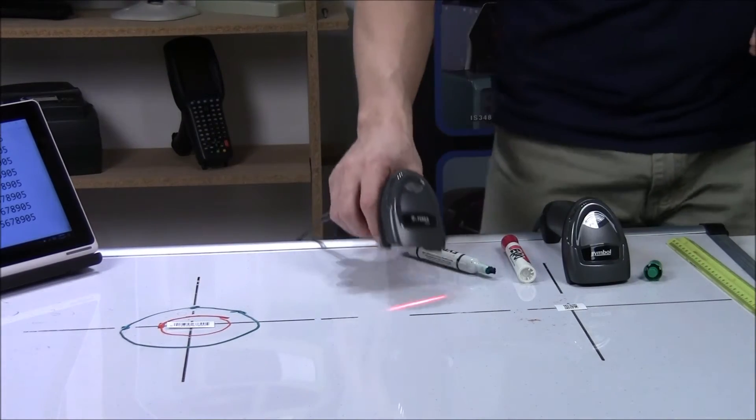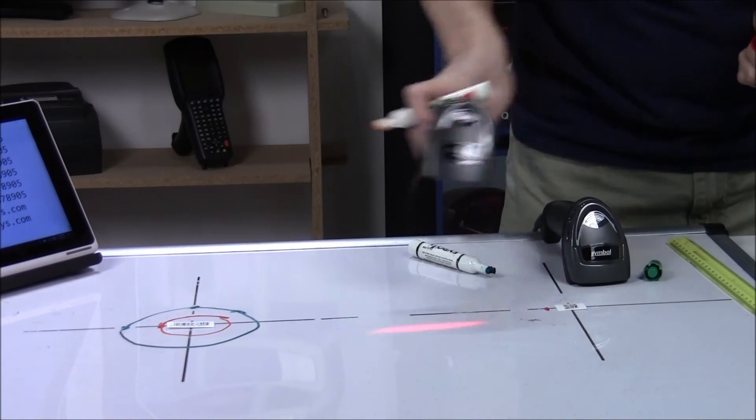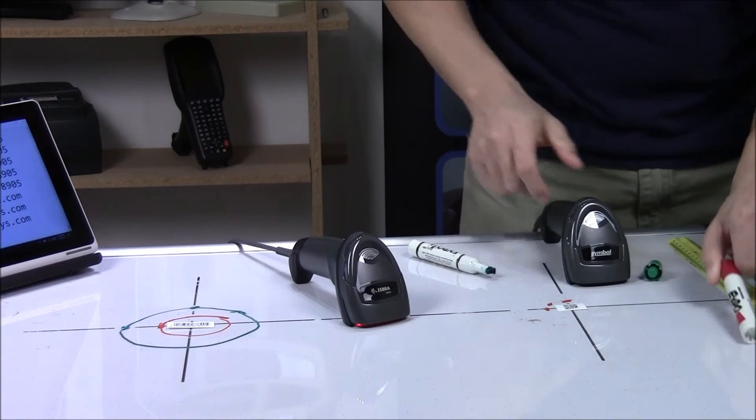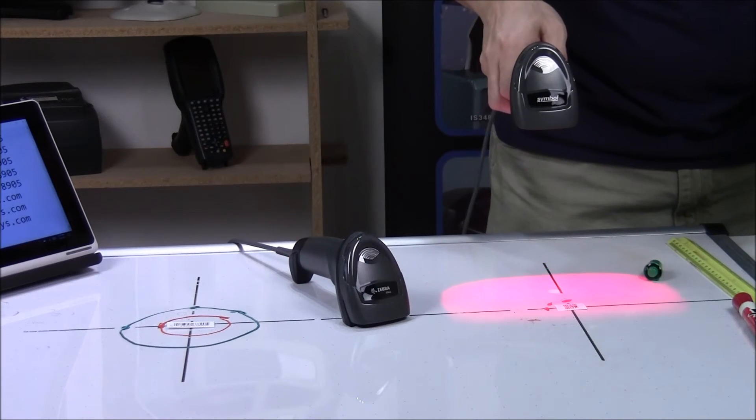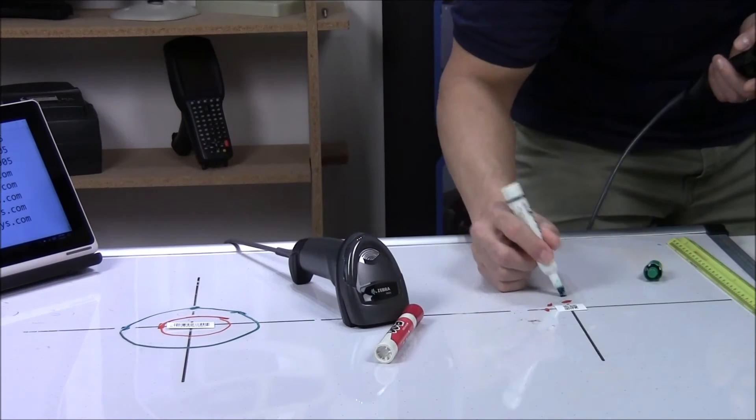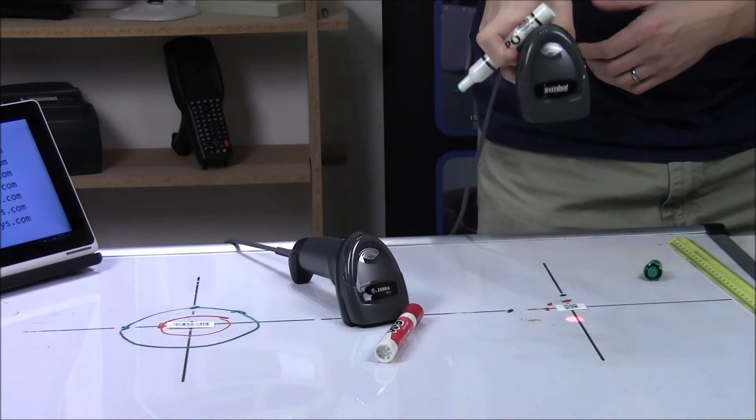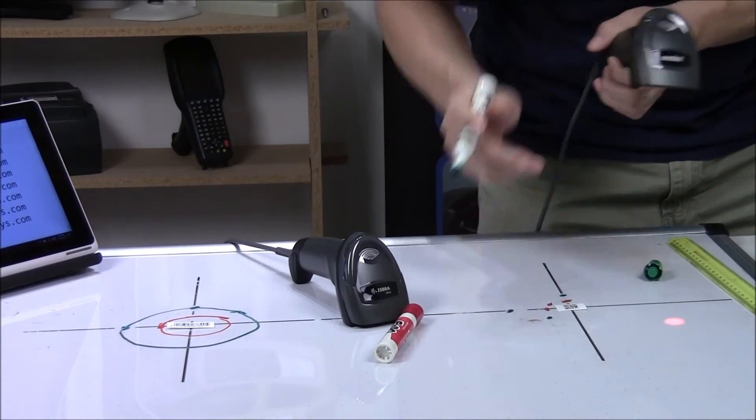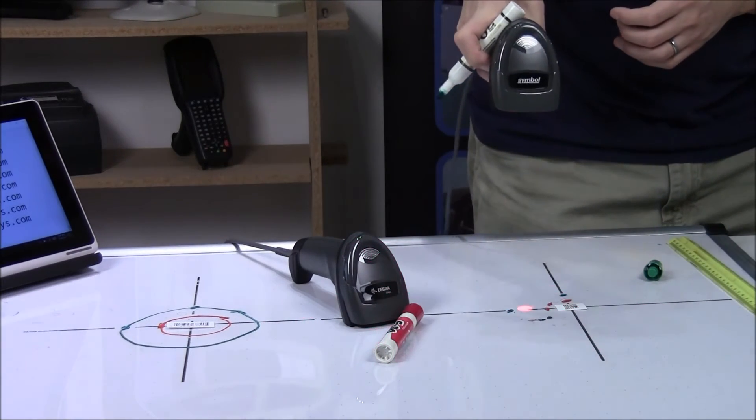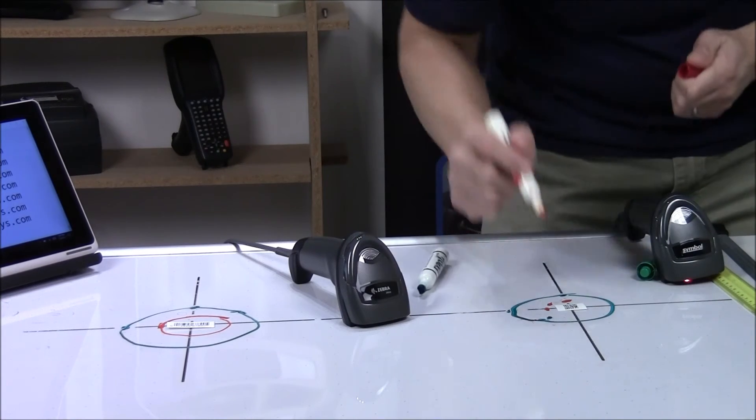We'll move over to the 2D barcodes. We'll do the same test. Similar results there. And then, with the 43. So, the same kind of results. You can see that one circle is bigger than the other.